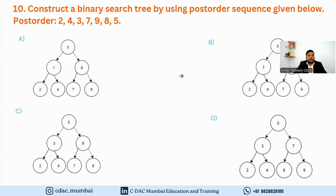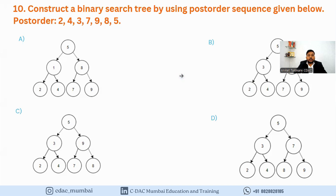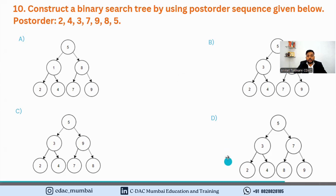The next example: construct a binary search tree using the post-order sequence: 2, 4, 3, 7, 9, 8, 5. There are three types of tree traversal: in-order (left, root, right), pre-order (root, left, right), and post-order (left, right, root). In post-order, we first visit the left child, then the right child, then the root.